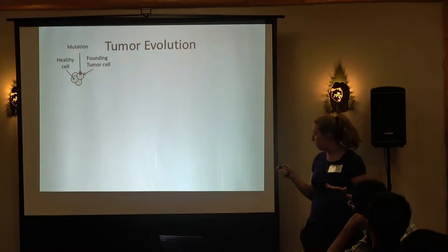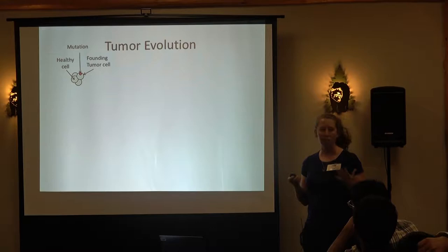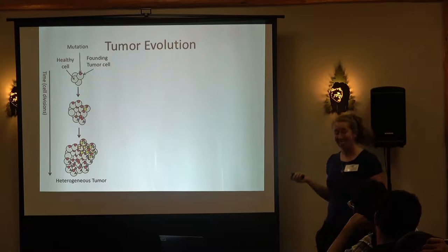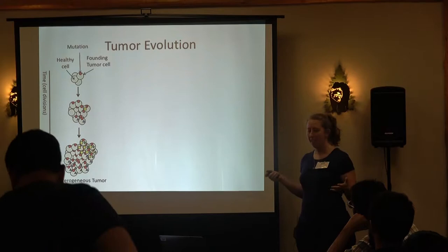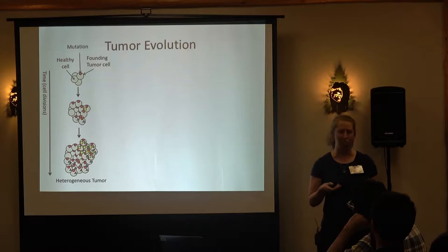At some point in the past, some healthy cell acquires a mutation, and this mutation gives that cell a replicative advantage and it starts to replicate. Different descendants of that initial founder cell might acquire different mutations later on in time. At any given point in time, a tumor is going to be a heterogeneous collection of different cells that contain different complements of these somatic mutations.